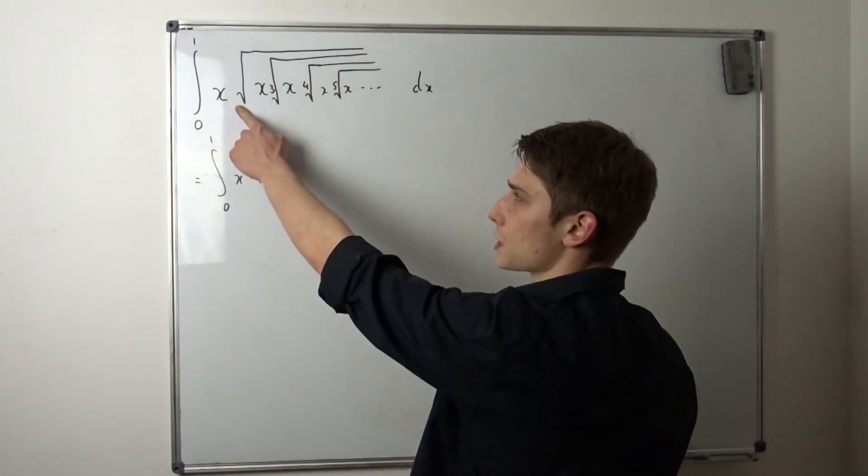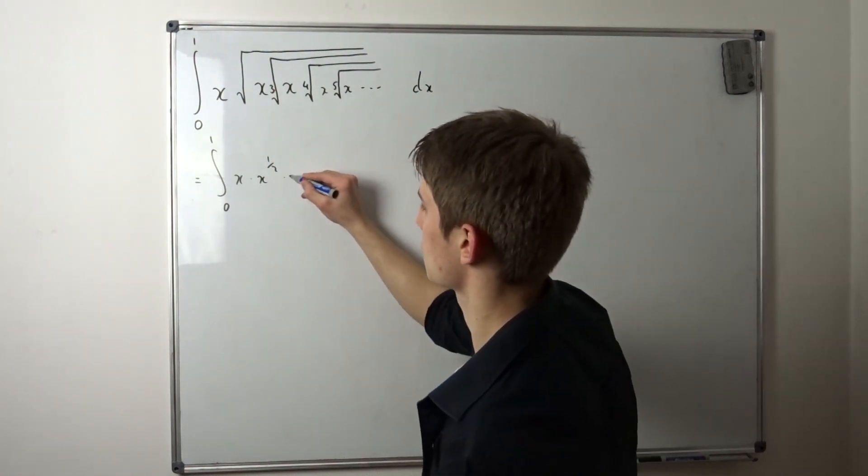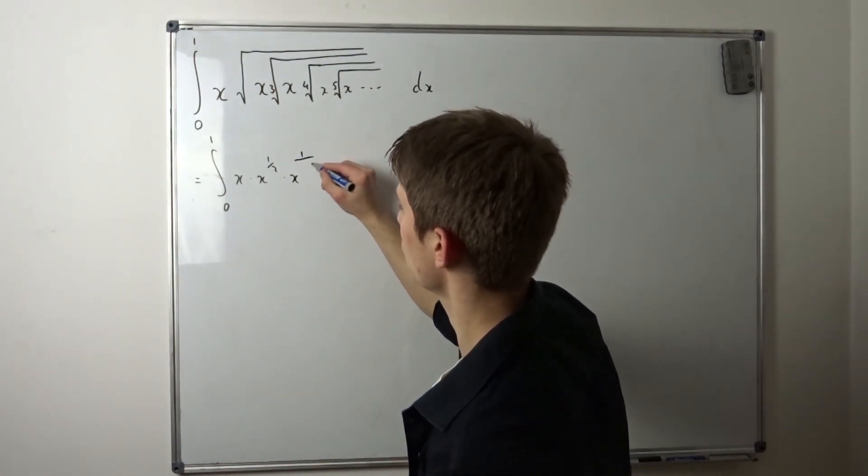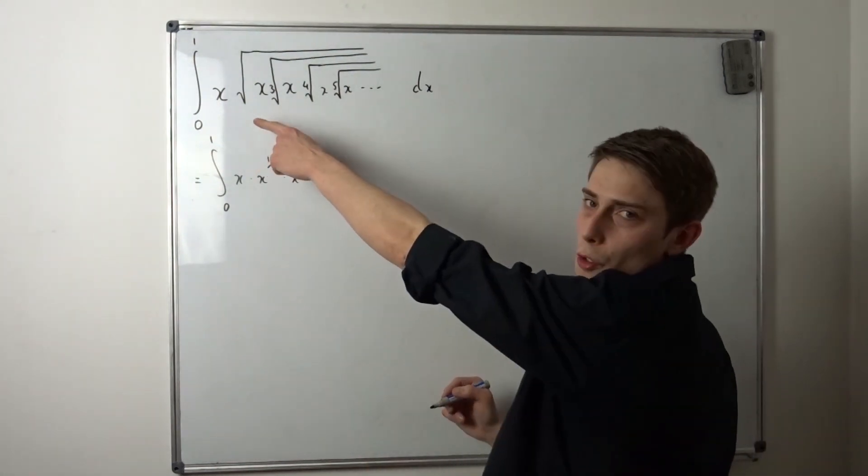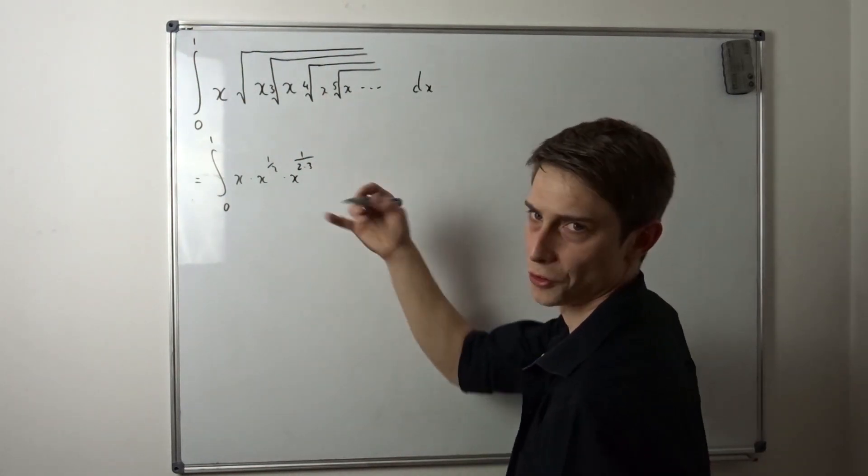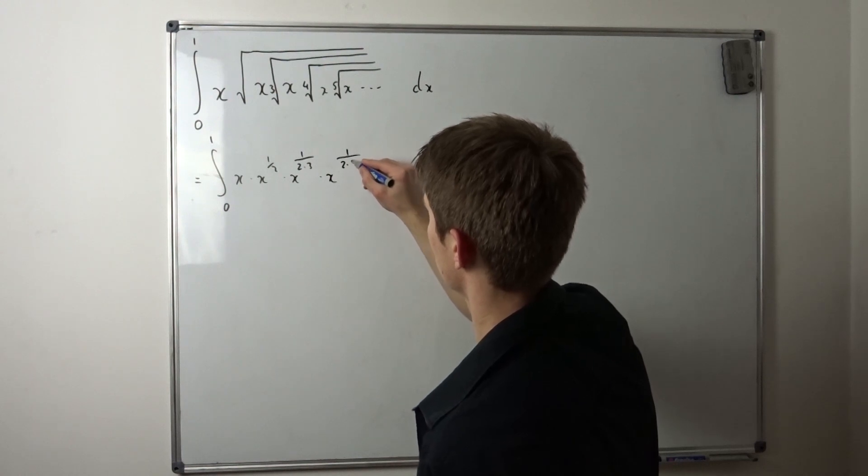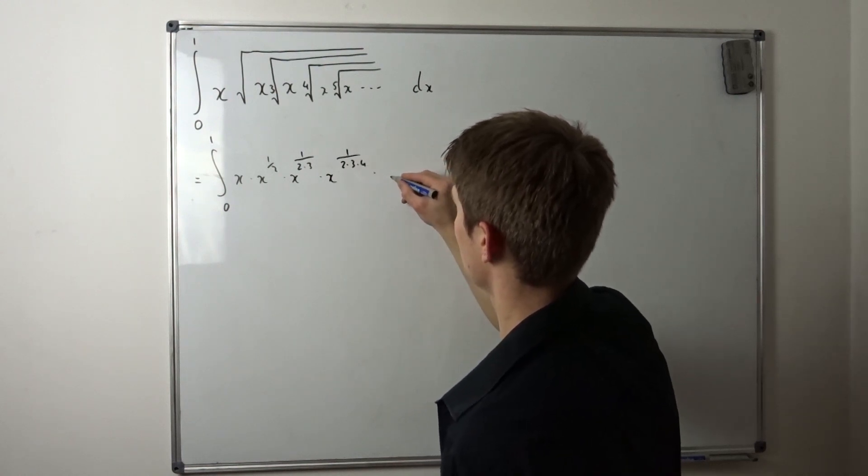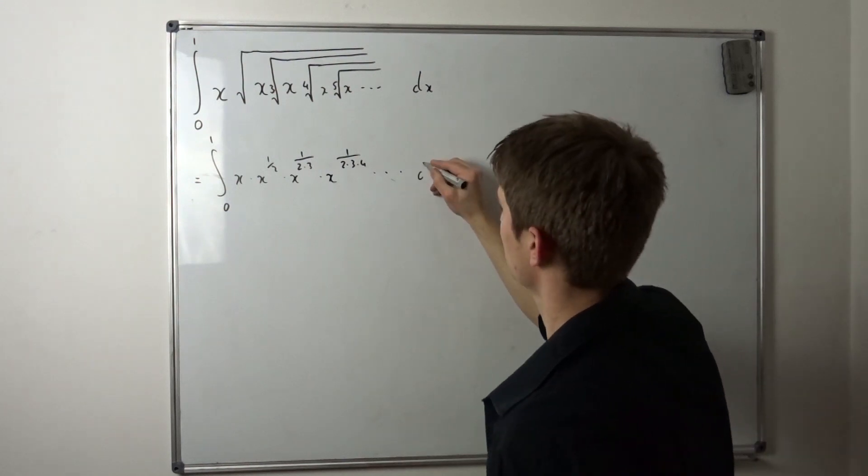And now we distribute this one half power to this cube root onto this x. So that's times x to the one over two times three. Let's move on with this process. So this square root times cube root times fourth root onto this x gives us times x to the one over two times three times four. And this goes on to infinity, as you might notice.